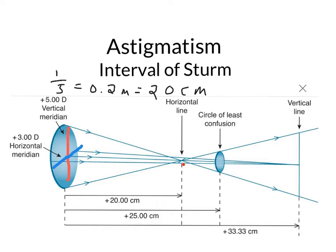This interval right here between the horizontal focal line and the vertical focal line is called the interval of Sturm. This distance right here — let me outline it in green — this distance right here is called the interval of Sturm in astigmatism.